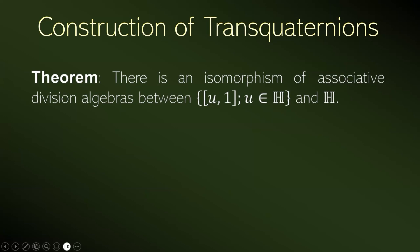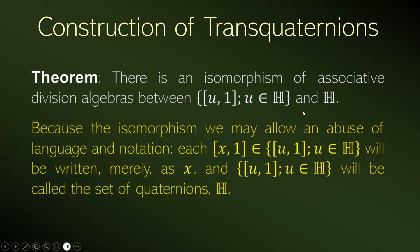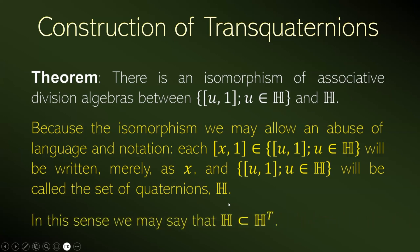So we can say that this subset of the transquaternions is an isomorphic copy of the quaternions. In this sense, we will say that the quaternions are a subset of the transquaternions. In this way, transquaternions are an extension of quaternions that allows division by zero.